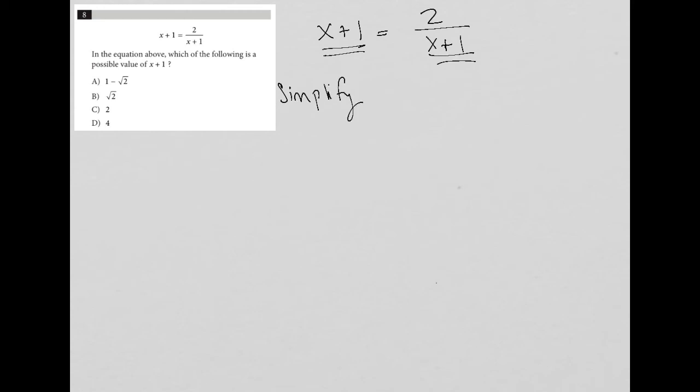Again, simplify questions typically are very short, like what we have here - only a line and a half. And they typically have an equation or expression provided. So how do I simplify the equation that's been provided to me? Again, if I want to solve for x plus 1, I will need to isolate x plus 1. So the best thing for me to do is to multiply both sides by x plus 1.